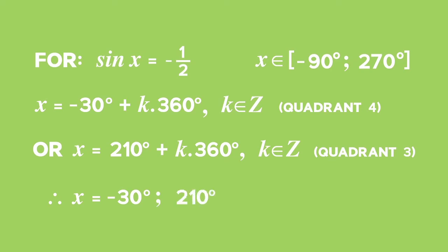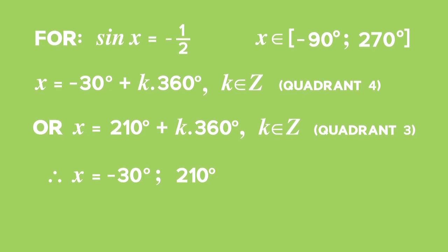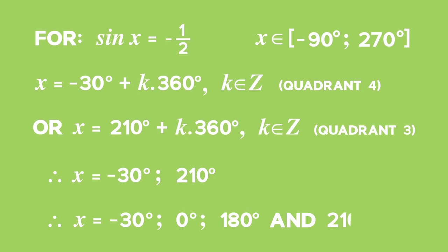The combined solutions for this equation are x equals negative 30 degrees, 0 degrees, 180 degrees, and 210 degrees.